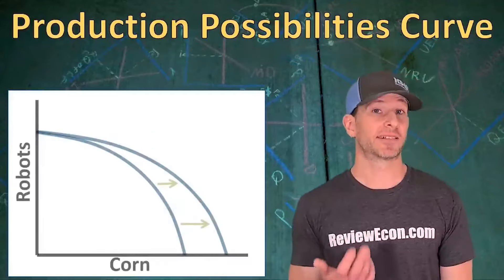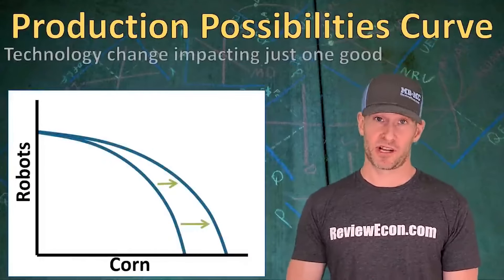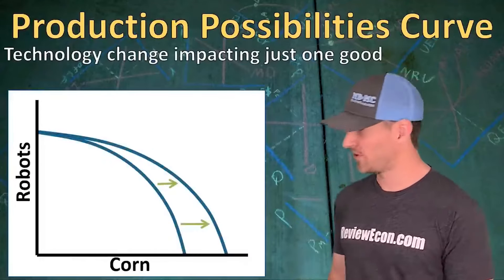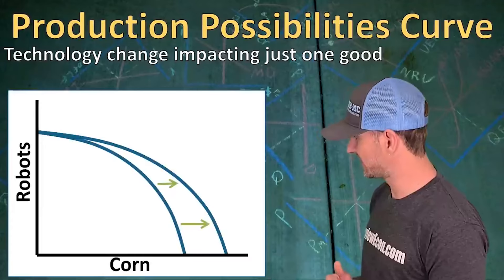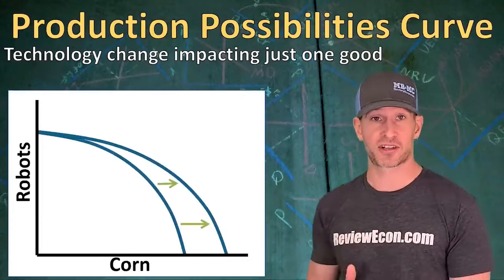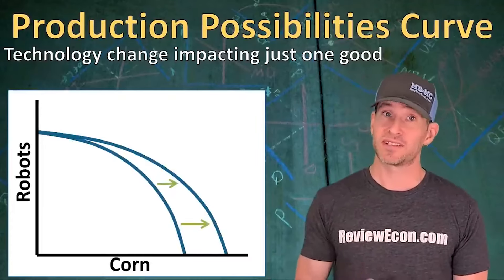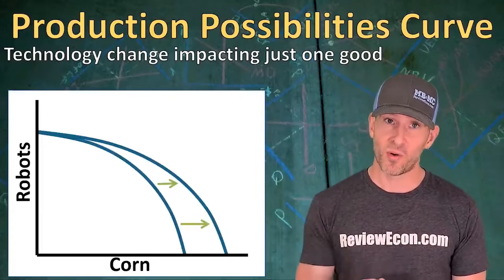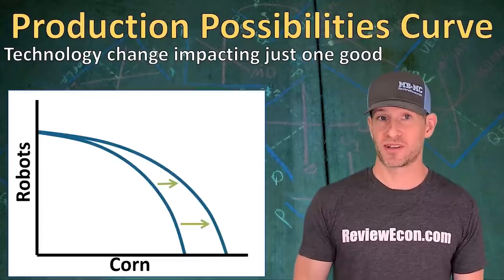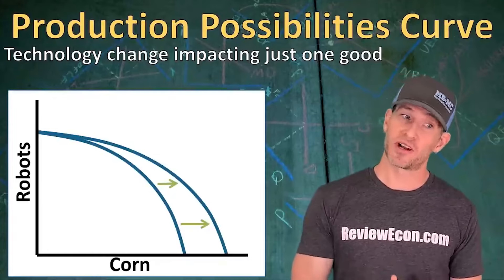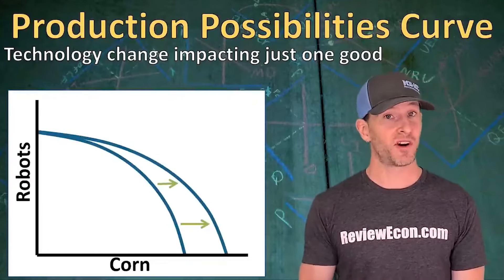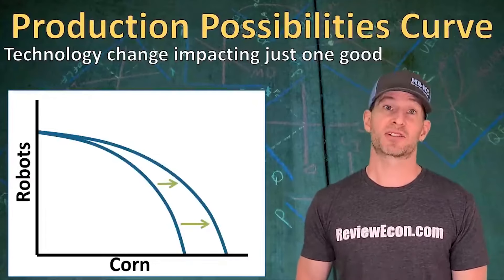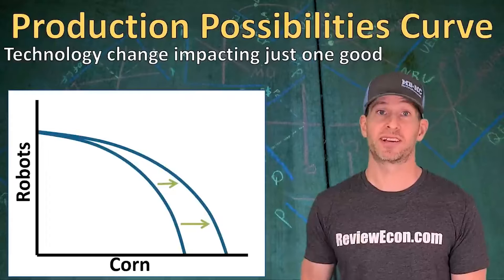If we saw a technology change that only impacted the production of one good — for example, an increase in the technology for corn production — we would see an outward shift of just the corn side of the production possibilities curve. The production possibilities of robots wouldn't change, but the possible production of corn would increase.